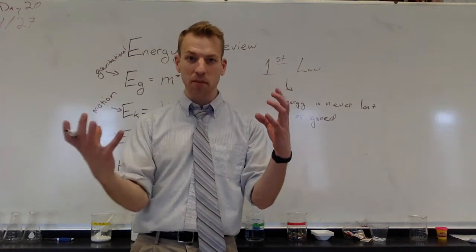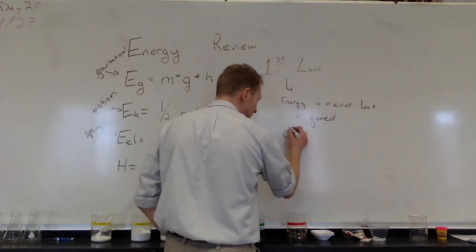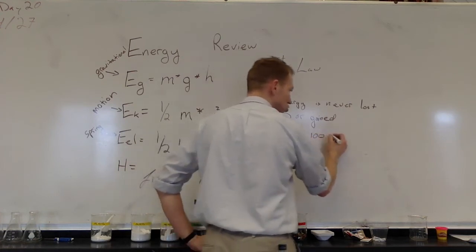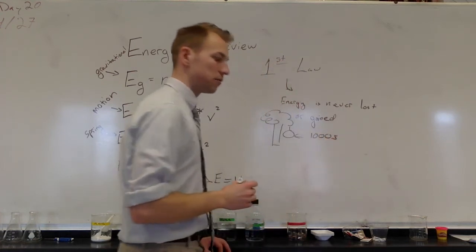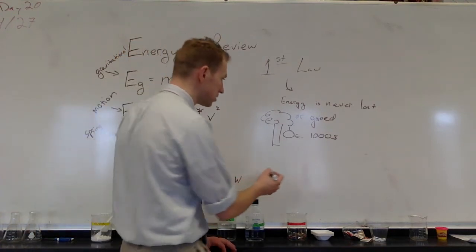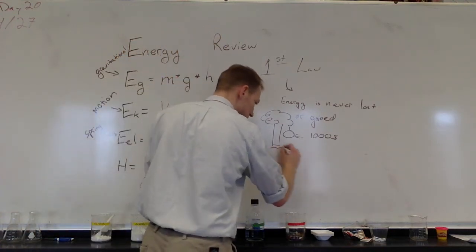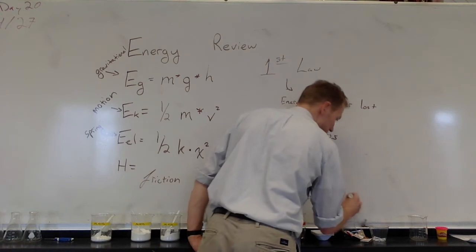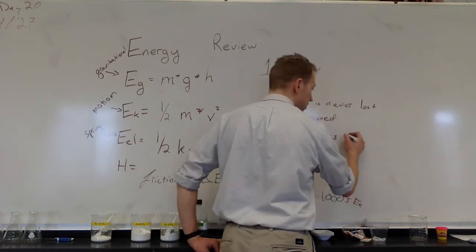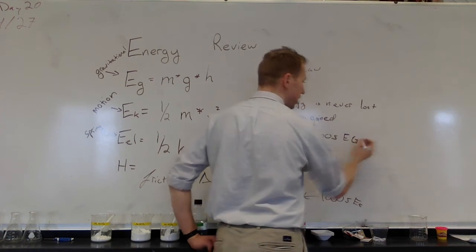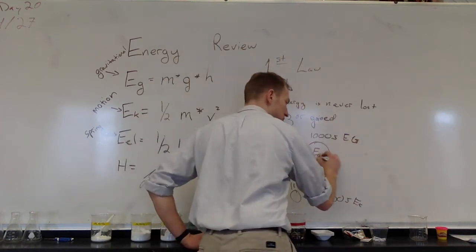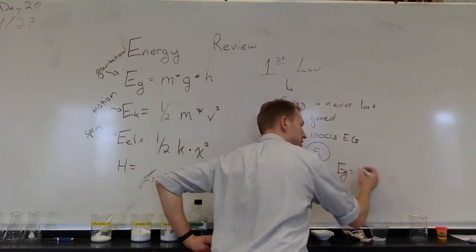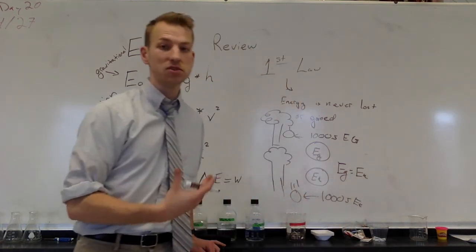So if I've got an apple hanging from a tree, and that apple has 1000 joules of gravitational energy when it's up off the ground, as that apple falls, it is right before the ground. Now it has 1000 joules of kinetic energy. We knew that all of the energy here was gravitational and that all of the energy here is kinetic. And we know that these two things, because of the first law of thermodynamics, must also be equal.